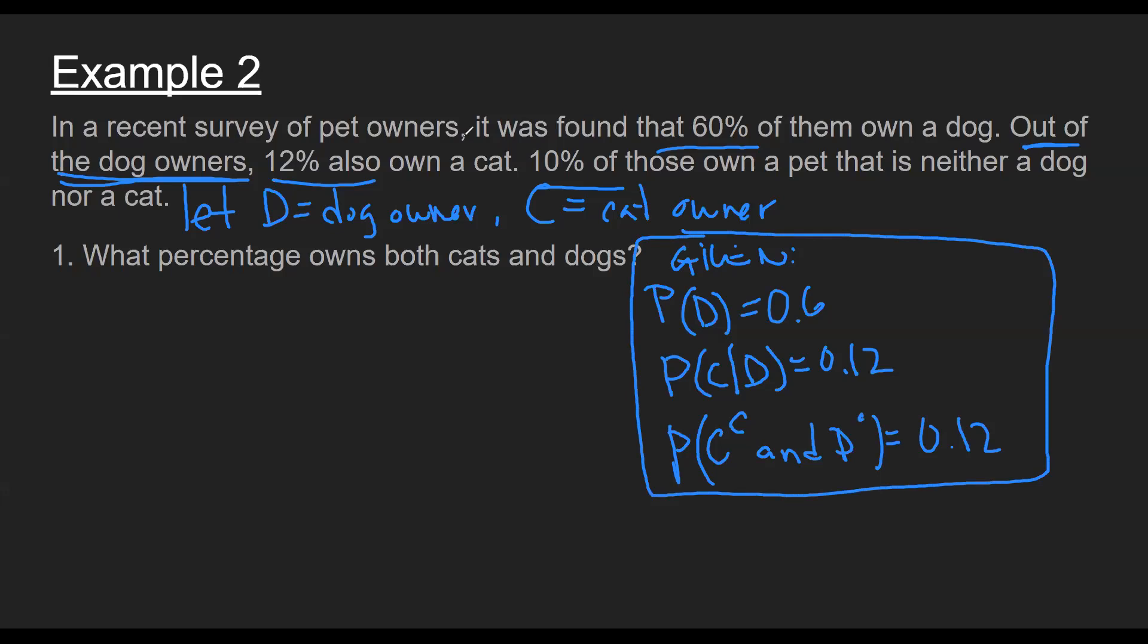So question asked, what percentage owns both cats and dogs? I see both, I see and. So when I write this, this is simply just the intersection, C and D. And so now we have to wrap that together. Well, here's the given information. Here's what we're trying to find. Is there a rule that connects them? And we do have a rule.